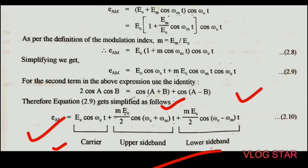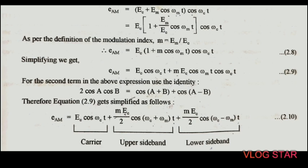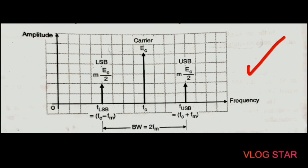The expression for the AM wave shows that it consists of three terms. The first term is the unmodulated carrier signal, E_c cos(ω_c t). The second term is a sinusoidal signal at frequency f_c + f_m — this is called the upper sideband, with amplitude mE_c/2. The third term is a sinusoidal signal at frequency f_c − f_m — this is called the lower sideband, with amplitude mE_c/2. The frequency response of the AM wave is plotted with frequency on the x-axis and amplitude on the y-axis.